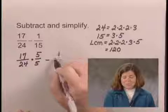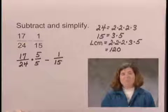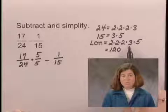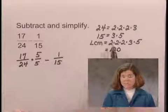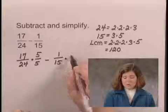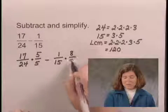Now we need to write 1 15th with a denominator of 120. Again, looking at the least common multiple, we notice that what's missing from the least common multiple with 15 is 3 factors of 2 or 8. So we multiply 1 15th by 8 over 8.